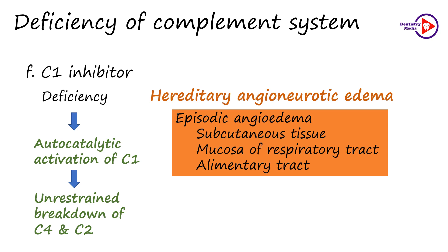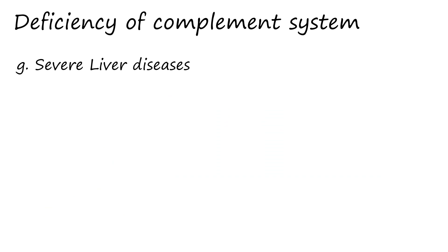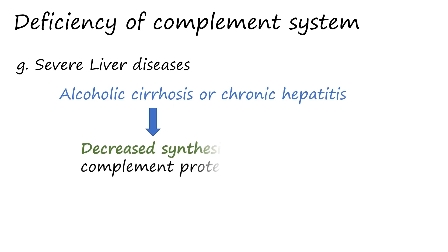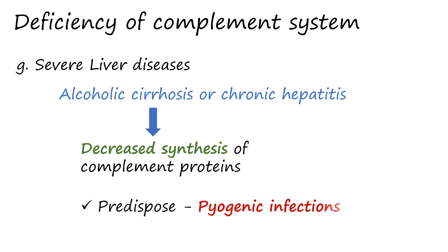In this condition, the levels of C1 are normal while C2 and C4 are depleted. Acquired deficiency of the complement system may result from severe liver diseases, for example alcoholic cirrhosis or chronic hepatitis, wherein the person has lost significant liver function and therefore cannot synthesize sufficient amounts of complement proteins, predisposing them to pyogenic infections.